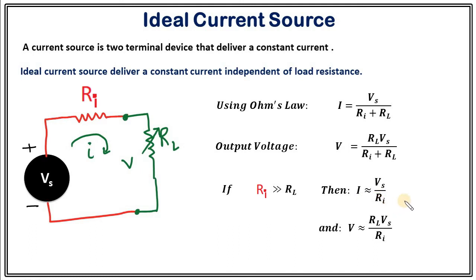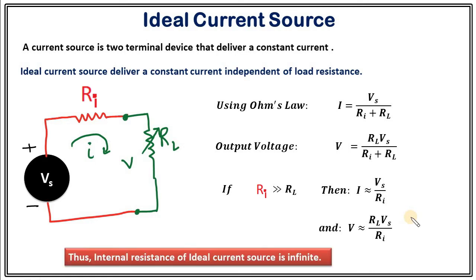So in spite of a change in RL, the current in the circuit won't change. Even though the output voltage is changing with RL, the current in the circuit is not changing. This is the condition for the ideal current source. Therefore, the internal resistance of an ideal current source is infinite.